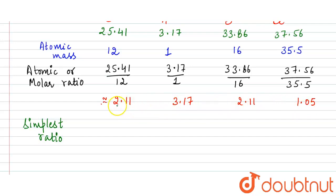What we will do is divide the atomic ratio by the smallest one: 2.11 by 1.05, 3.17 by 1.05, 2.11 by 1.05, and 1.05 divided by 1.05. If we solve these values, we will get 2.00 approximately, equal to 2, because the simplest ratio is in whole numbers.